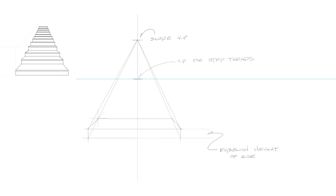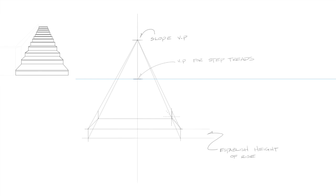Now from this corner, we'll draw a vertical line up until it intersects the top of the slope line on either side. Then we'll connect these lines by drawing a horizontal line between them.